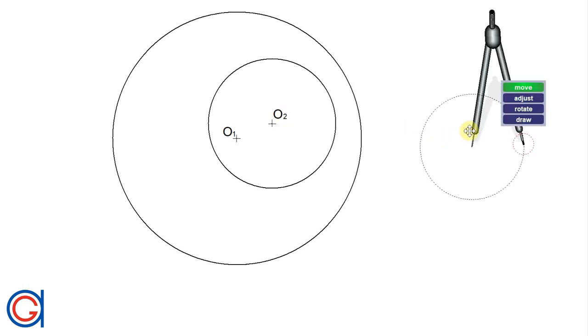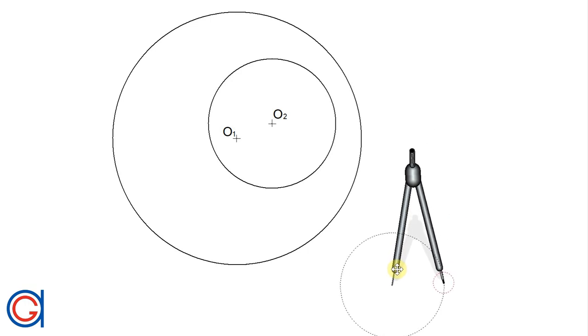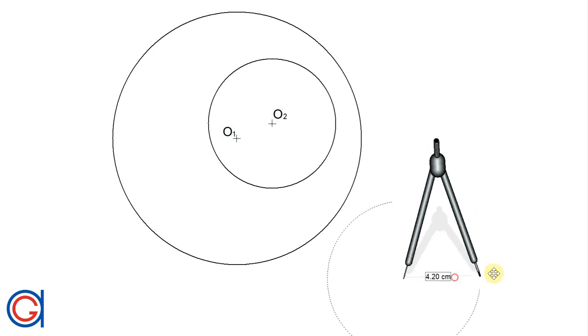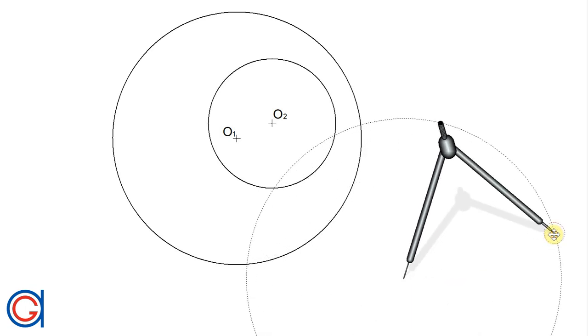To start this process, the first thing we are going to do is get our compass and draw a random circle which cuts both circumferences of circle number one and circle number two at four points.